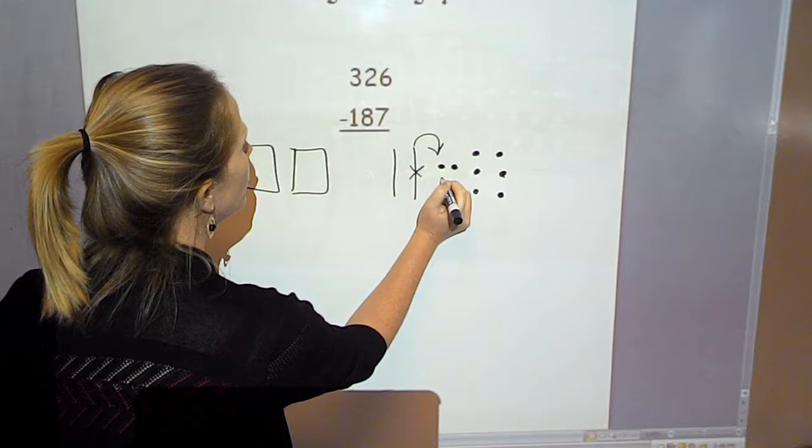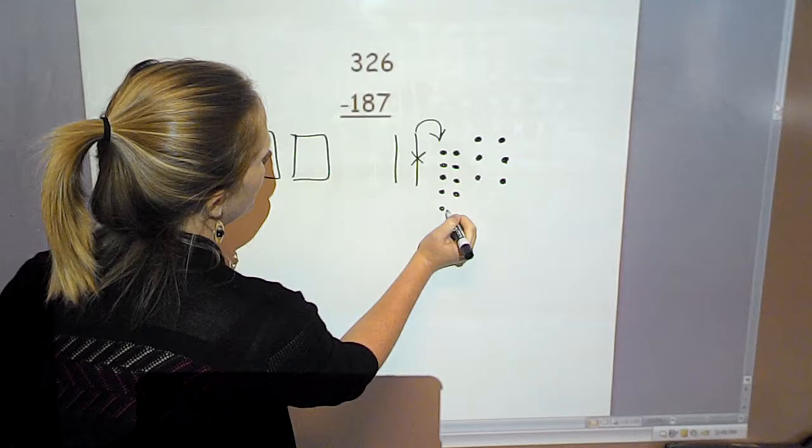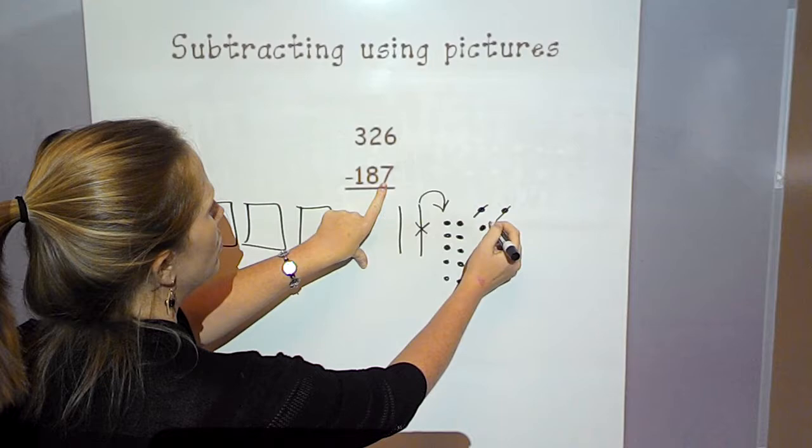1, 2, 3, 4, 5, 6, 7, 8, 9, 10. Now I can subtract my 7 ones. 1, 2, 3, 4, 5, 6, 7.